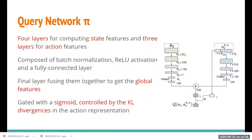As part of the deep Q-network formulation, we also need to compute Q-values with a network architecture. At a high level, it comprises two separate paths for state and action features that are fused together at the end, with several layers containing batch normalization and ReLU activation. These are fused to create global features, which are gated with a sigmoid controlled by the KL divergences used in the action representation.